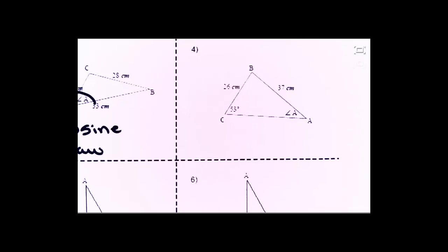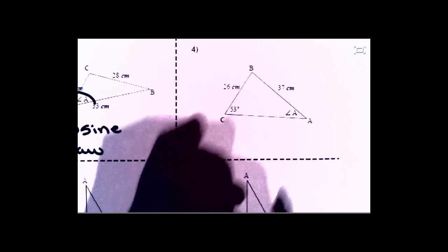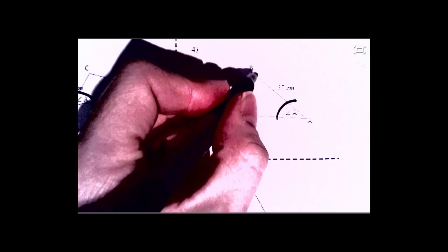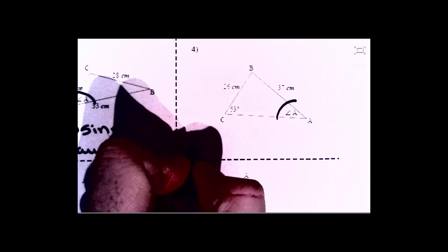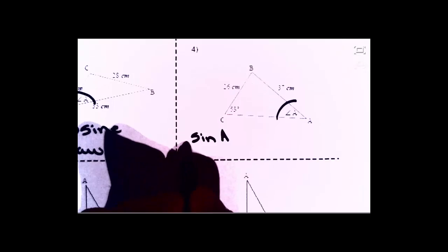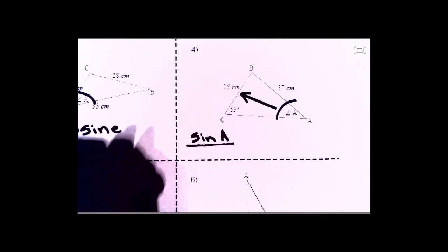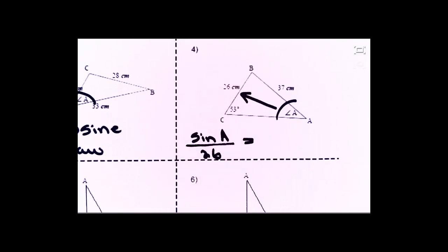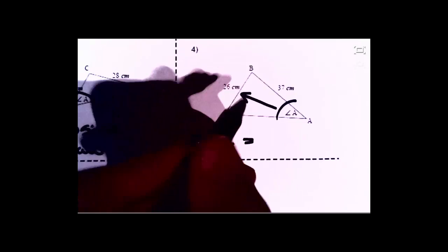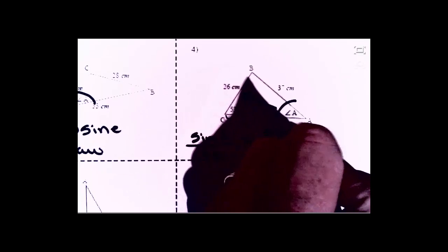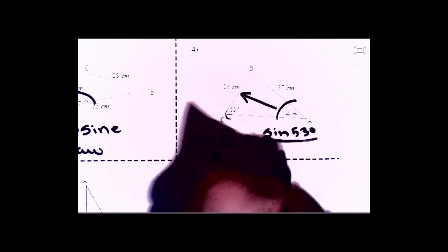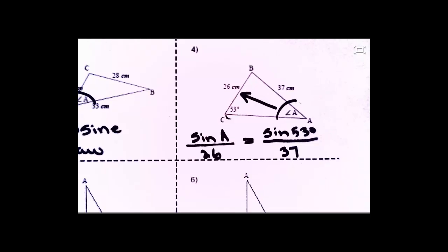Example four: solve for angle A, and again we can't assume it's a 90-degree triangle. Test sine law: write sine A over its side 26, then look for another corresponding angle-side pair — 53 corresponds with 37. That reveals itself immediately as a sine law problem. So that one uses sine law.